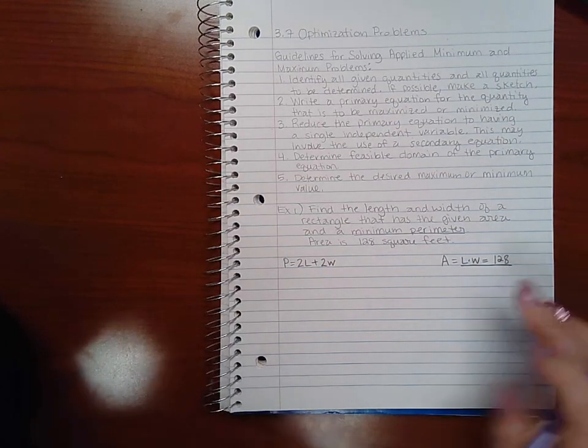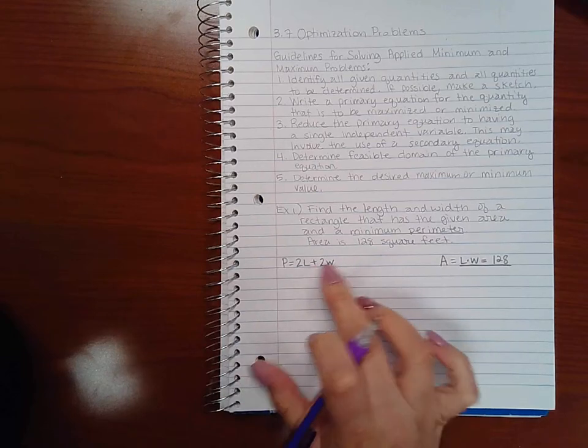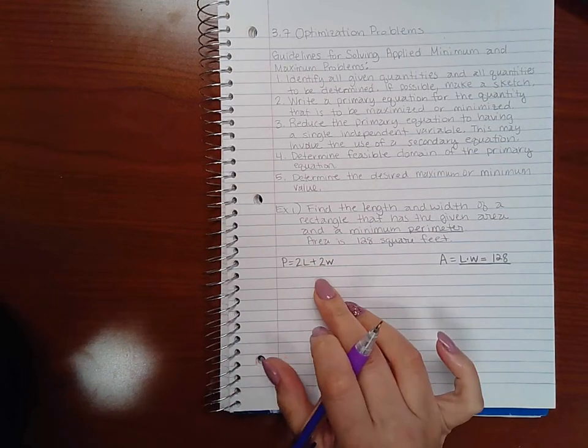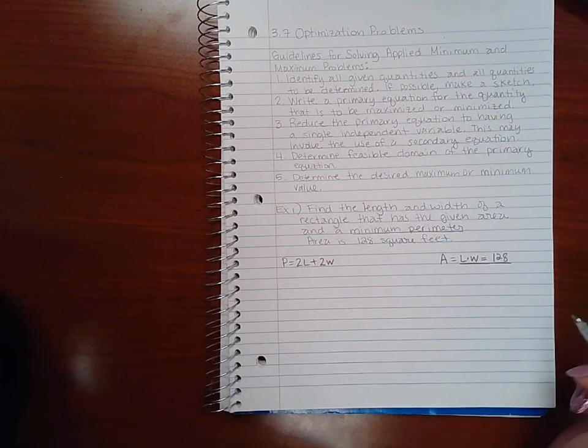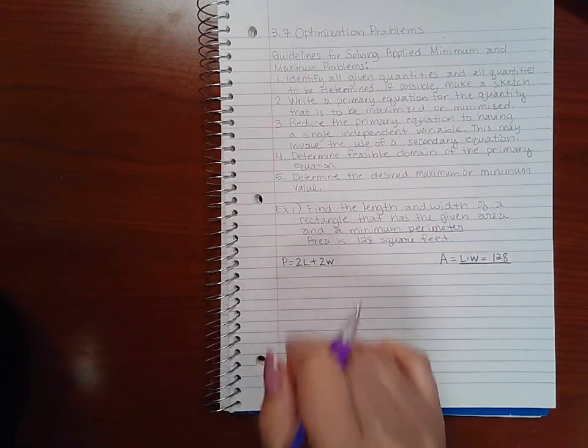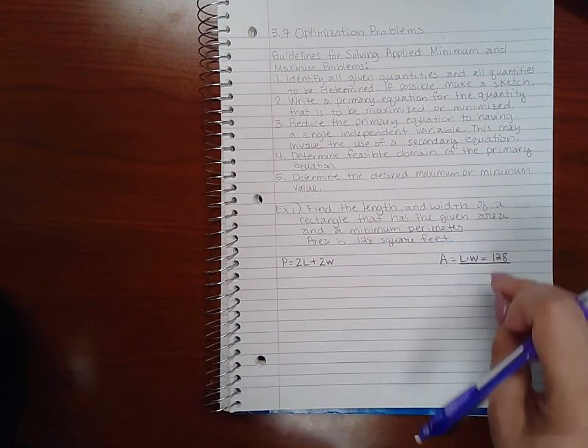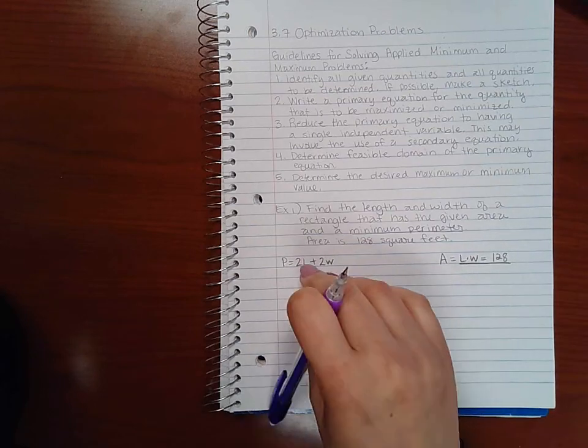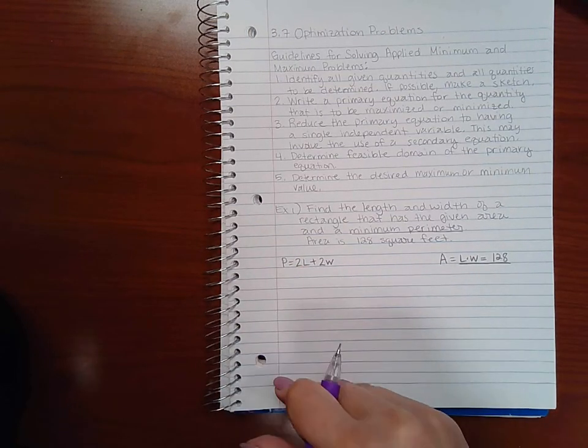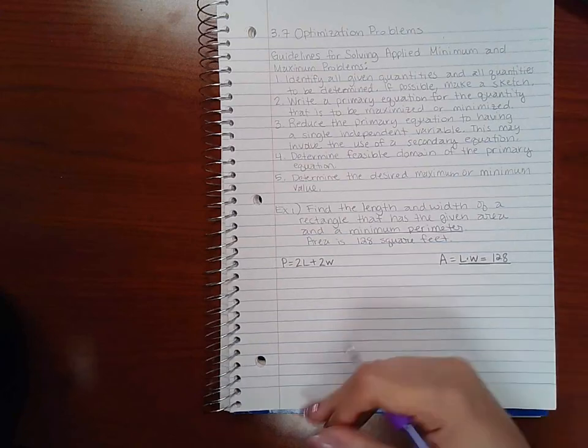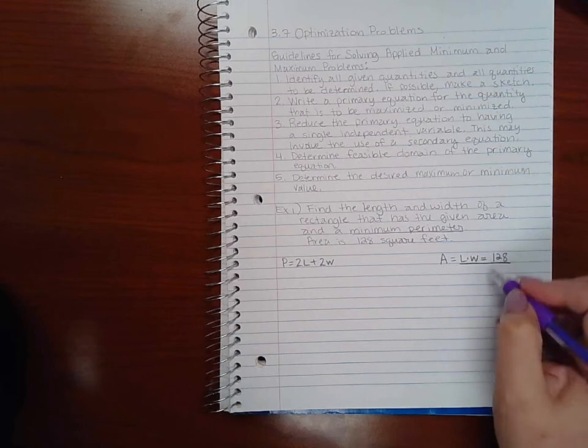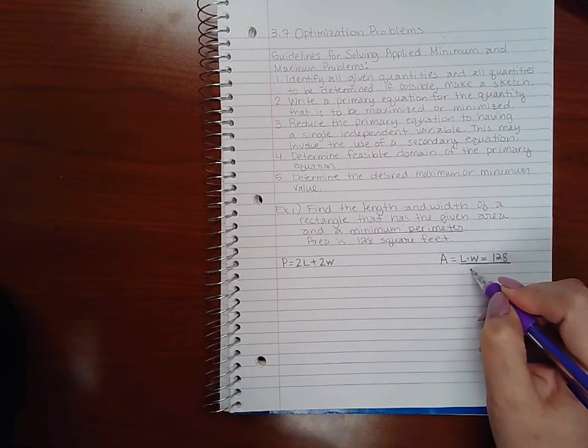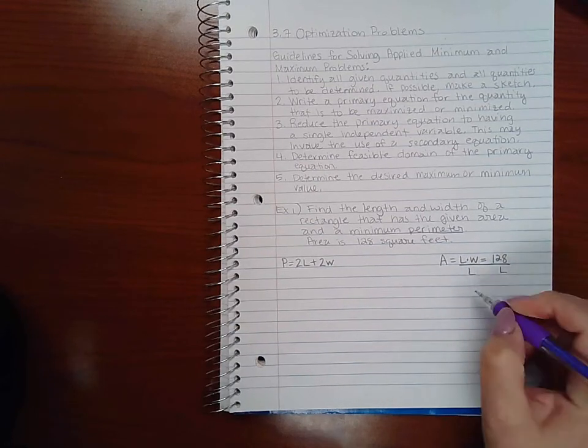If I could take this equation and solve for one of the letters, I can substitute it in here and therefore create a primary equation which is one variable. Now it doesn't matter which one you choose because the answers are respective of each other. So if you choose L, you'll find L and then later go back and find width. If you choose to get width by itself, you'll find width at the end and then use that to go back and find length. So it makes no difference which letter you choose.